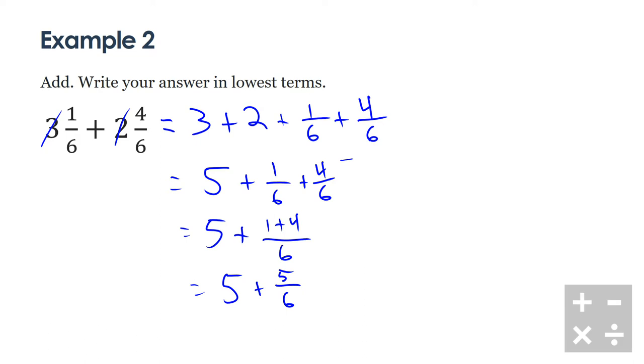So my answer is 5 plus 5/6. Now I need to write this into a mixed number format, so I'm going to write this as 5 and 5/6. I want to double check that my fraction is in lowest terms, and in this case 5 over 6 is in lowest terms because there's no other common factors besides 1 between 5 and 6.